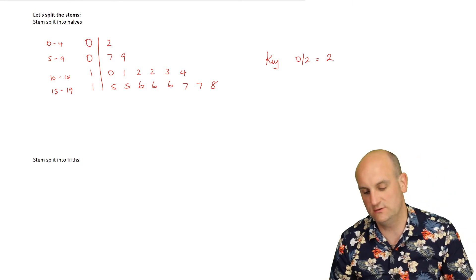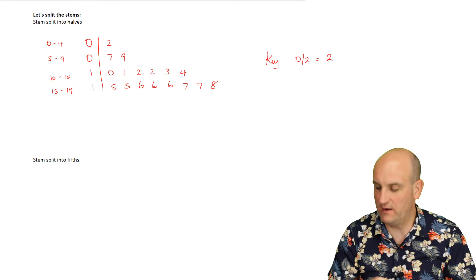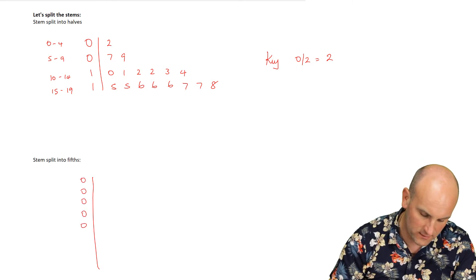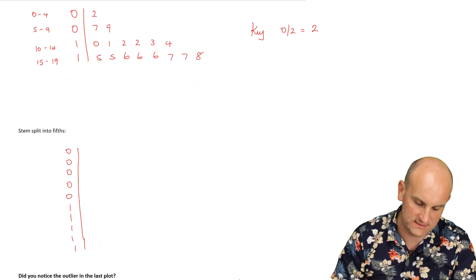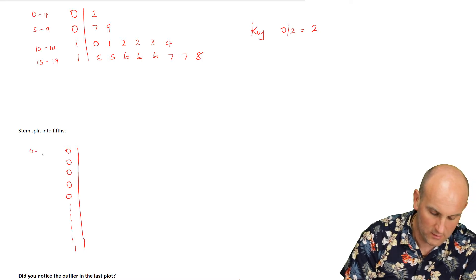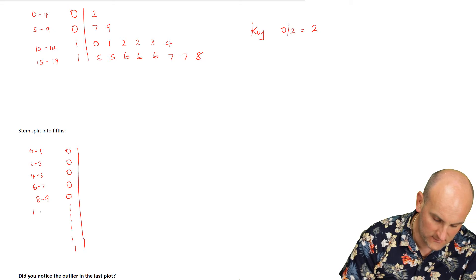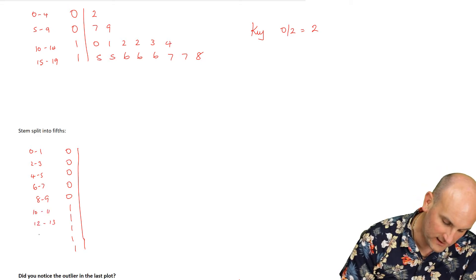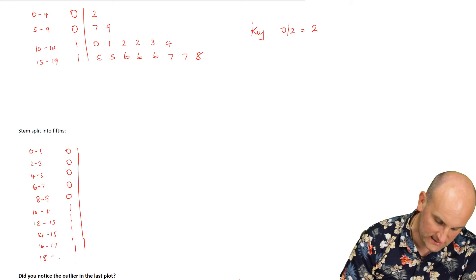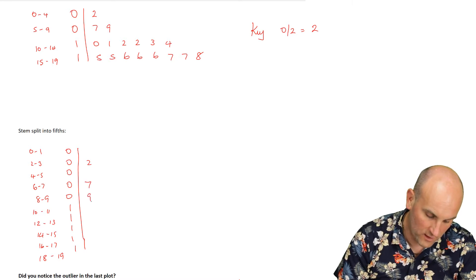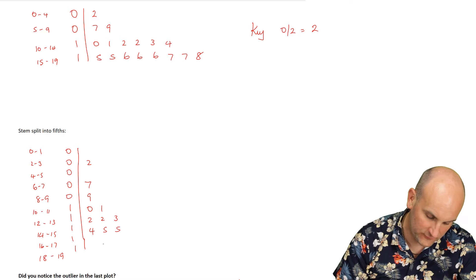Why not go one further and split it into fifths? That means five repetitions of each stem — 0 and 1 — each covering a range of 2 digits: 0–1, 2–3, 4–5, 6–7, 8–9 for the 0s, and 10–11, 12–13, 14–15, 16–17, 18–19 for the 1s. Key: 0 | 2 = 2. Populating those rows: the 2 goes in the first group, 7 and 9 in the 6–7 and 8–9 rows, then 10, 11, 12, 13, 14, 15 twice, 16 three times, 17, and 18.